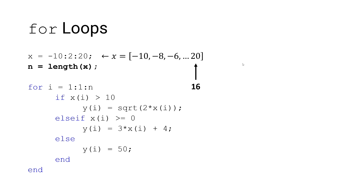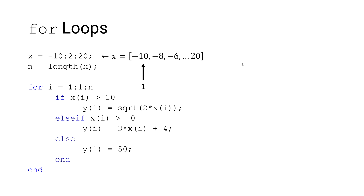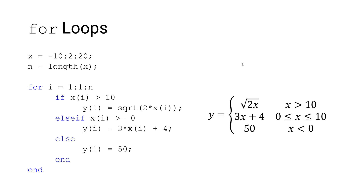Next, we're going to start our for loop. We start with our loop variable, which is serving as an array index. Our loop variable or array index has a starting value of 1, an incremental or step value of 1 to move to the next element, and a final value of 16, which is the last element in the array. Next, we can move on to our conditional statements: if, else if, and else.